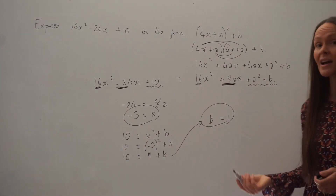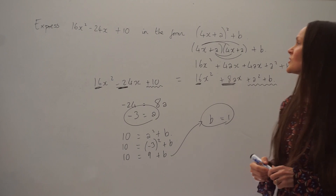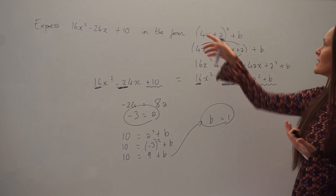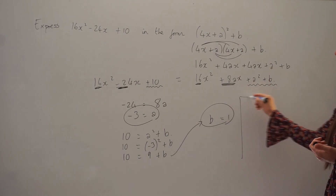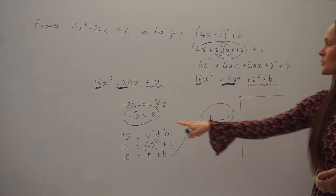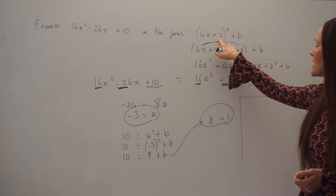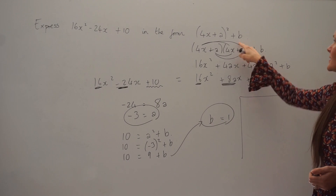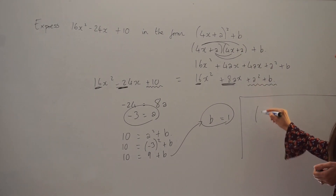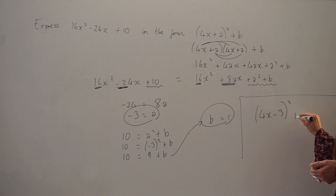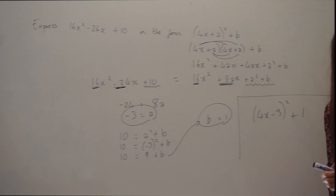So we've worked out the second unknown. If you want to write it in this form now, all you would have to do at the end is just substitute negative 3 in here and positive 1 in here, so that we've written it in the form they asked for.